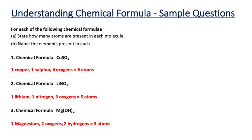In our final example we have Mg(OH)2, which is the formula for magnesium hydroxide. We have a capital M for magnesium, a capital O, and a capital H — three different elements present. Counting the atoms: we have one magnesium, and the OH is in brackets with a two after the bracket, which means you have to multiply everything in the bracket by two. So we have one magnesium, two oxygens, and two hydrogens — a total of five atoms.